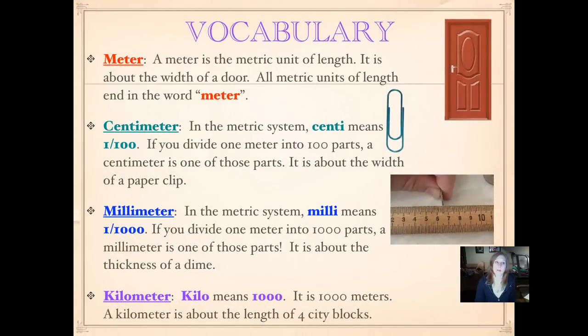Here is our vocabulary: a meter. A meter is the metric unit of length. Everything is going to end in the word meter. It is about the width of a door. So if you hold your arms out, it's probably a little longer, maybe your elbow to the end of your finger. Let's go on to centimeter then. So a meter would be 1, that's your base unit. And then a centimeter is if you divided that meter into 100 parts, little teeny tiny parts, a centimeter is one of those parts. It's 1/100. It's about the width of a paper clip, not the length, not the long ways, but the width.